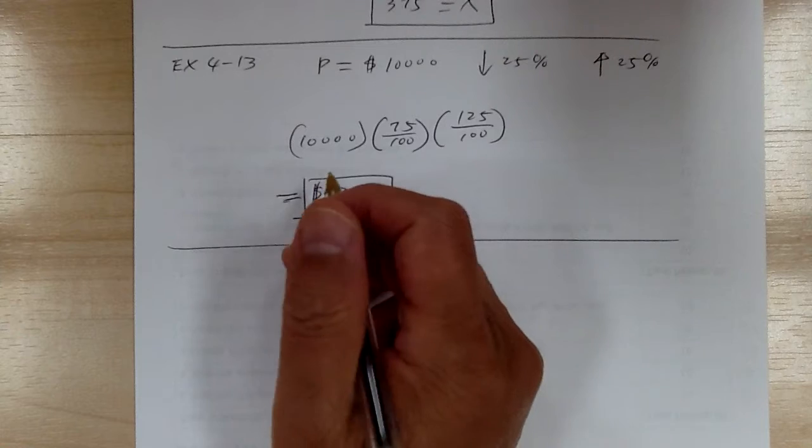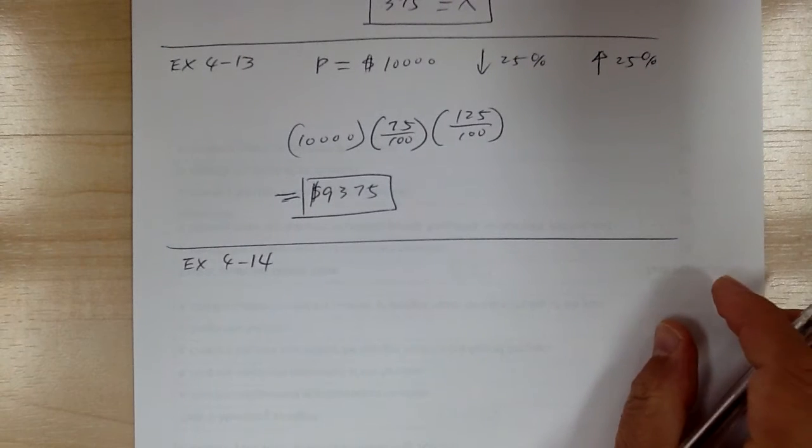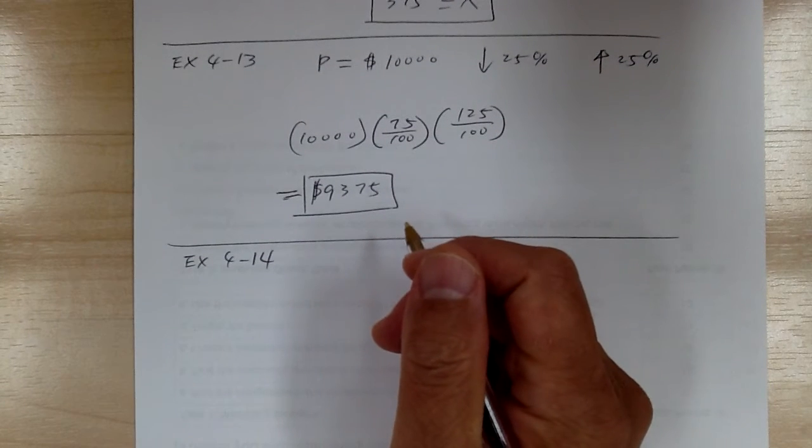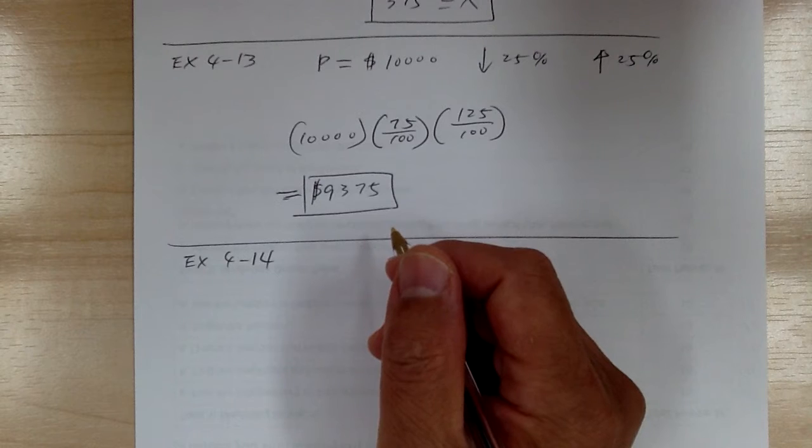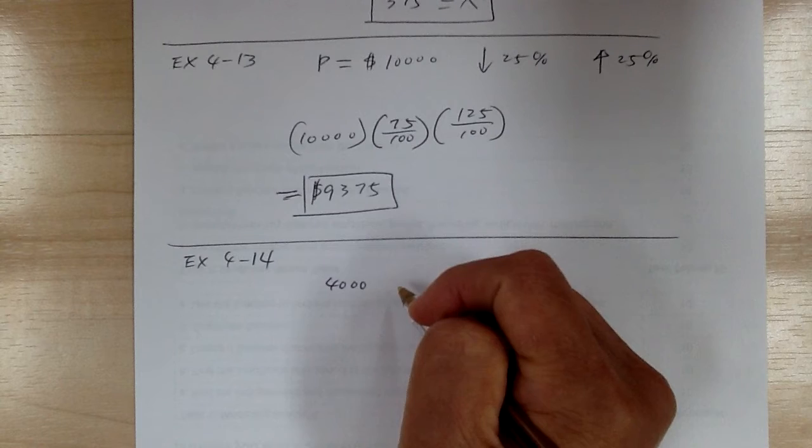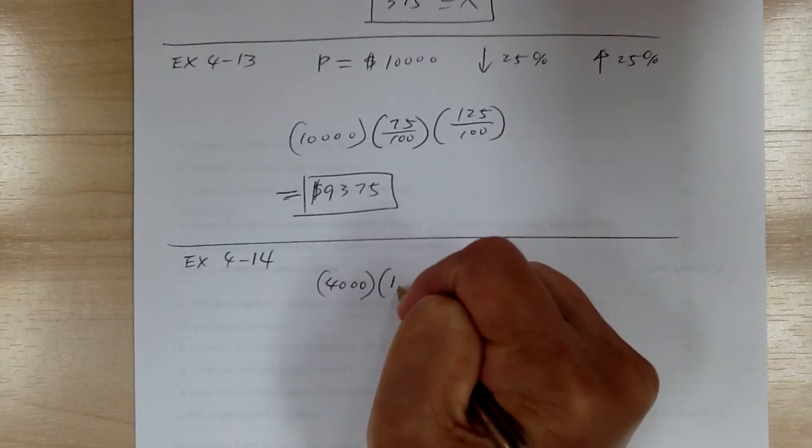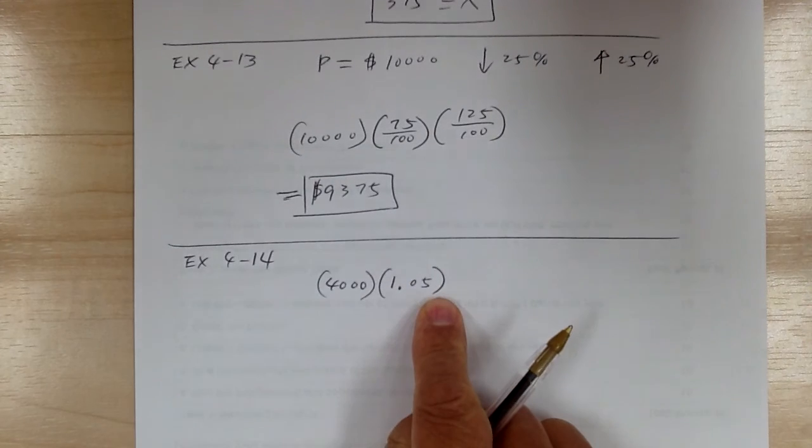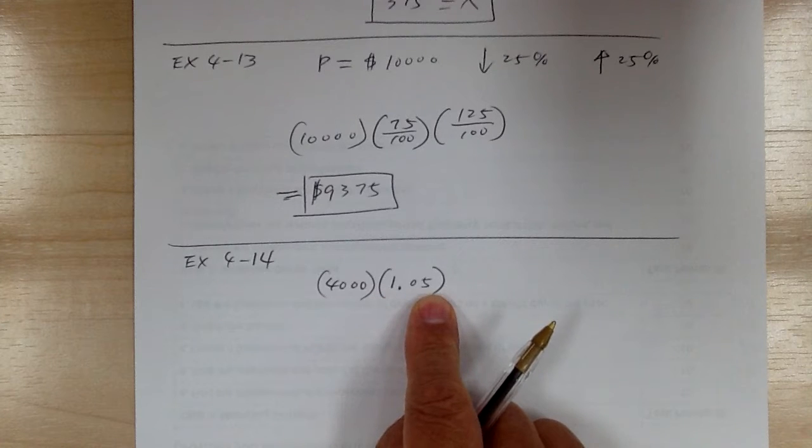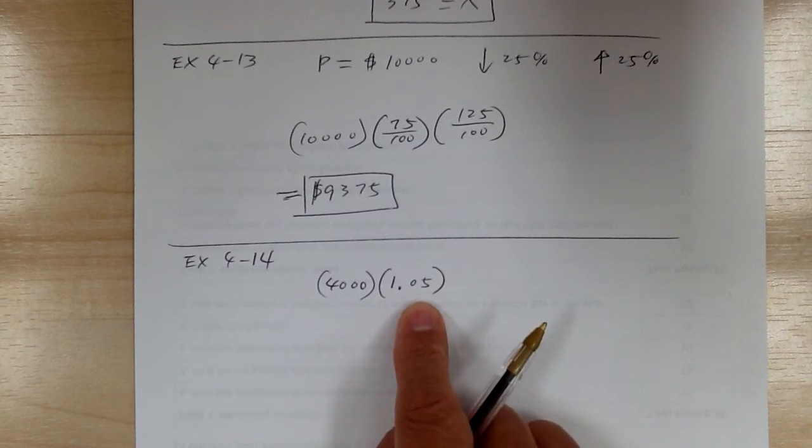Let's go to example 4-14. Suppose you borrow $4,000 at 5% annual interest. How much money will you owe after 4 years? So you start at $4,000 and after 1 year you're going to have to multiply by 1.05. 1.05 means 105%. So 100% is your principal and 5% is your interest. So you get total 105%.